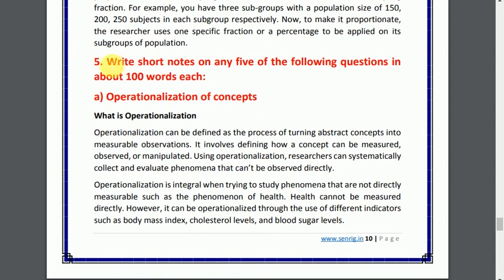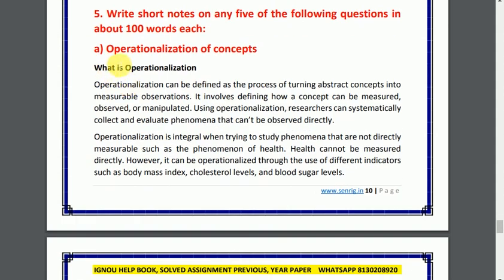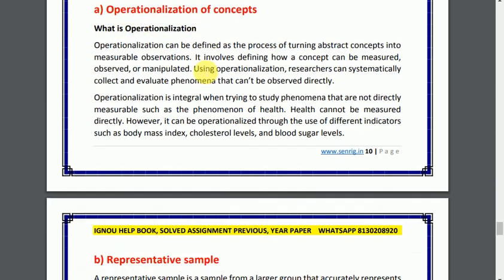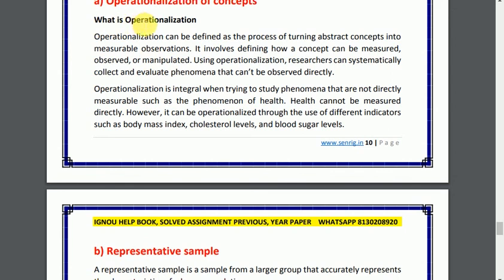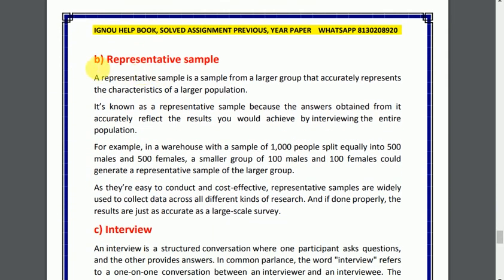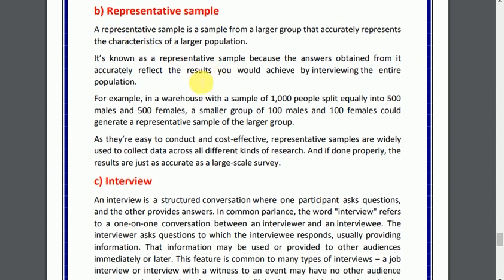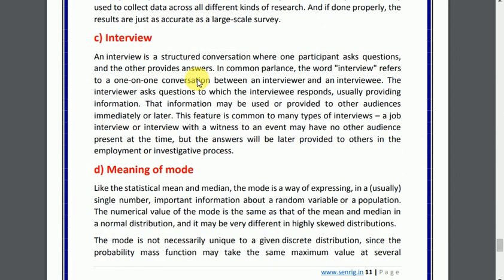Question 5: write short notes on any 5 of the following questions in about 100 words. Part A: operationalization of concepts. What is operationalization? The answer is given below. Part B: representative sample. You can see the answer below.